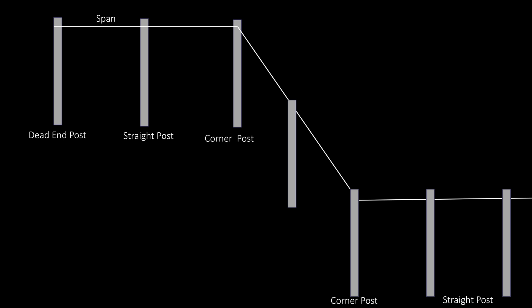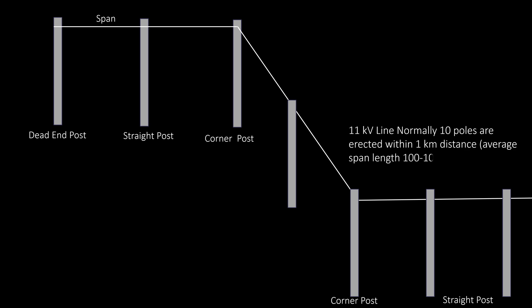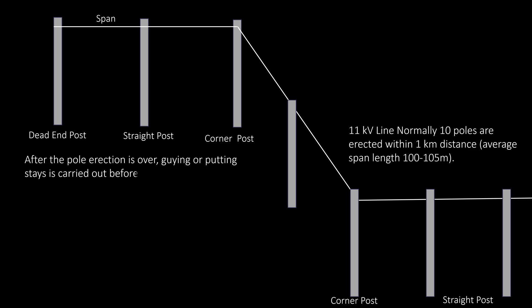We first erect poles at suitable positions as per proper survey and drawing. For 11 kV lines, normally 10 poles are erected within 1 km distance, with an average span length of 100 to 105 meters. After erection of poles, guying or putting stays is carried out before fitting and fixing of other accessories like cross arm, channel, V-bracket, insulators, etc.